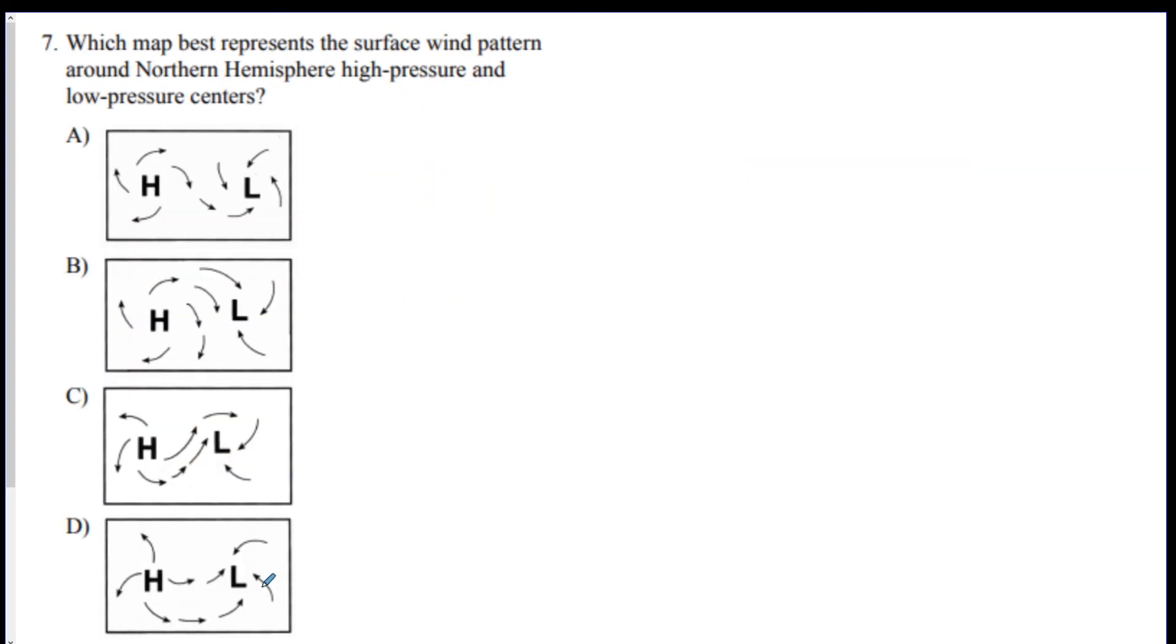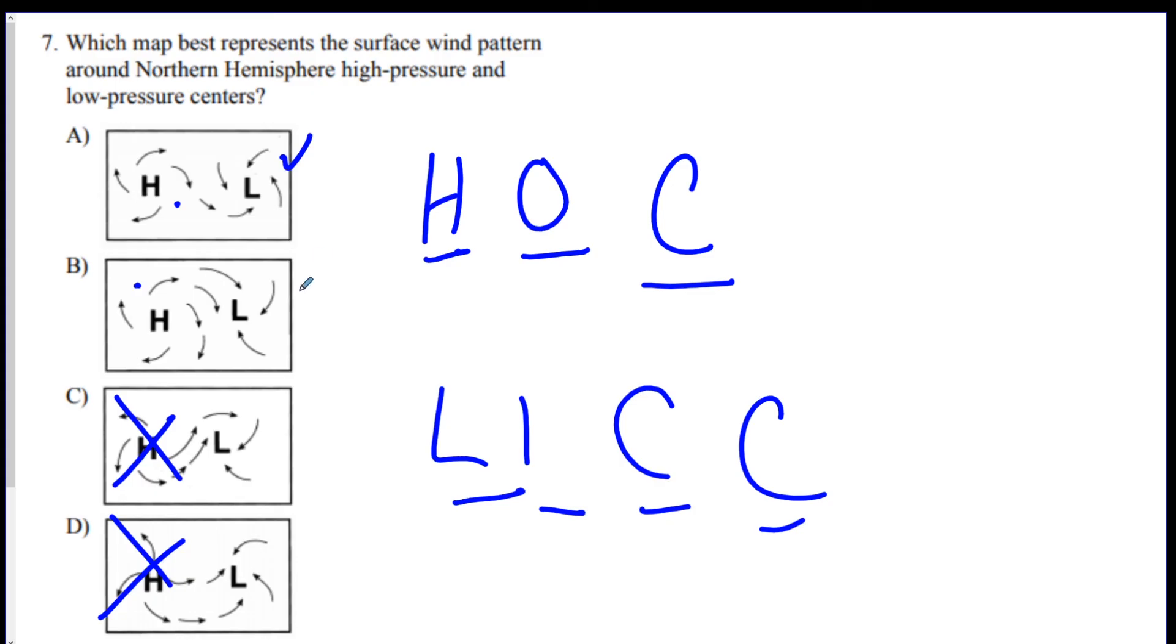Number seven. Which map represents the surface wind pattern around the northern hemisphere high pressure and low pressure? High pressure, high outward clockwise, which means this is good and this is good. This is bad and this is bad because that's going to the left. And then low inwards counterclockwise, so this is good. This one's bad. A. Remember when we drew the pictures, we did these arrows for the high pressure and then these arrows for the low pressure.